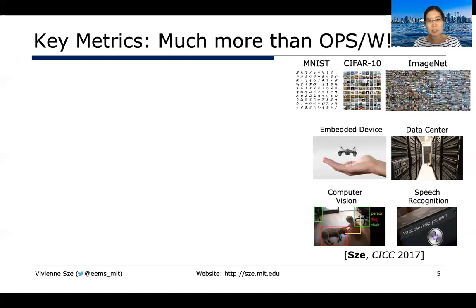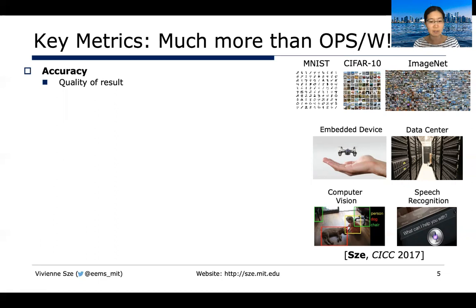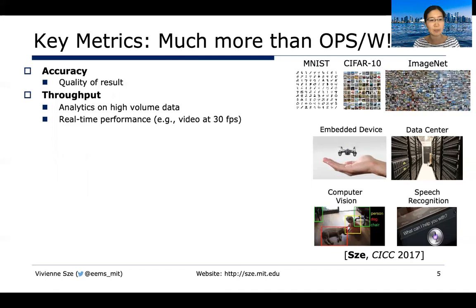When it comes to efficient processing of deep neural networks, there are many more metrics than just operations per watt. The first thing we care about is accuracy — one of the reasons this field has taken off is the impressive state-of-the-art accuracy achieved on many important tasks. But it's important to factor in the type of dataset you're achieving high accuracy on, so quality of results is very important.